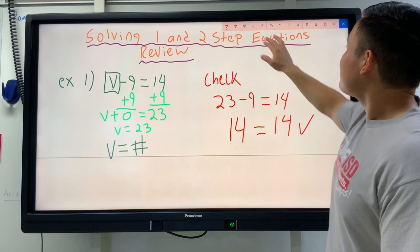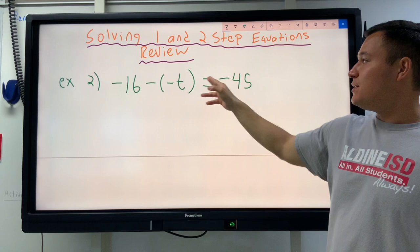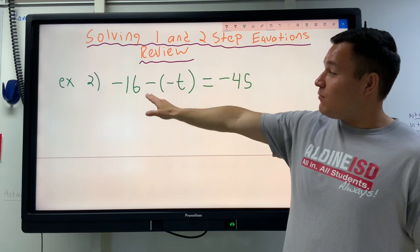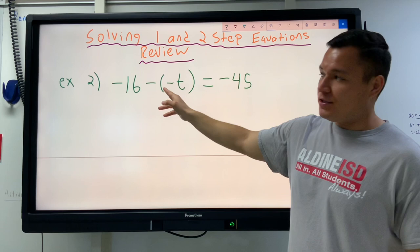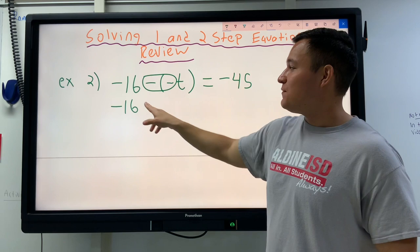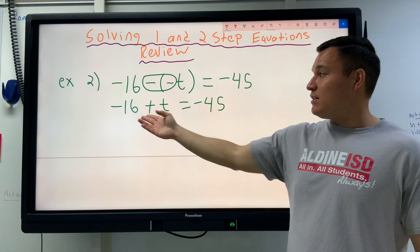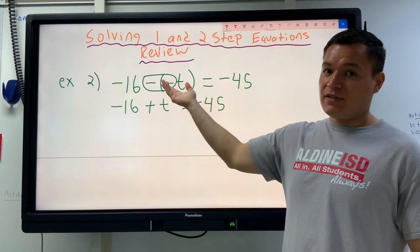In this example, we have negative 16 minus negative T equals negative 45. A lot of students have trouble with negative signs, but it's really easy as long as you do it step by step, one little piece at a time. So that one little piece we're going to start off with is we're going to check and see if we have two negatives next to each other. We do. Since we have two negatives next to each other, I'm just going to simplify this before I start on anything. Two negative signs combined to make a plus sign when they're side by side.